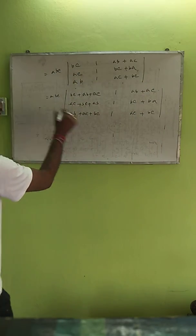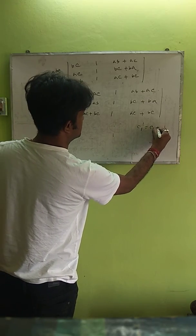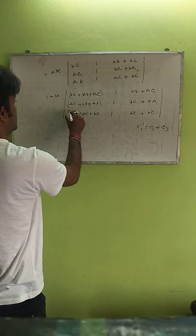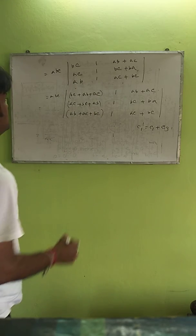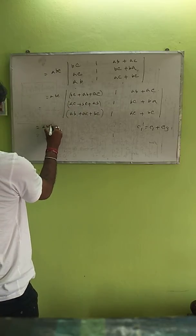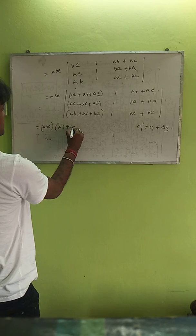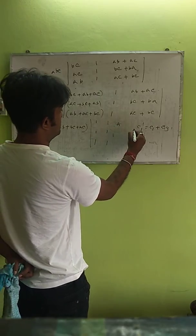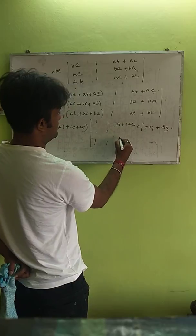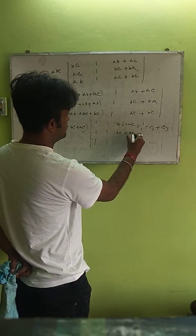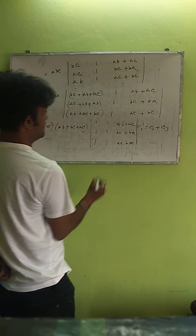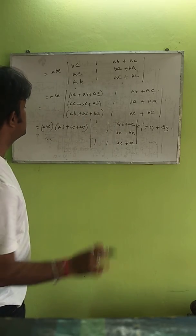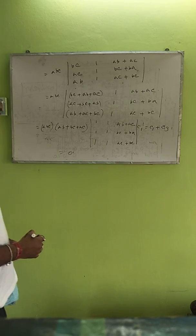We change the first column, that is C1' = C1 + C3. Taking AB+BC+AC common from the first column gives 1, 1, 1. Here we see that the second column and first column are identical, so the value of the determinant will be 0.